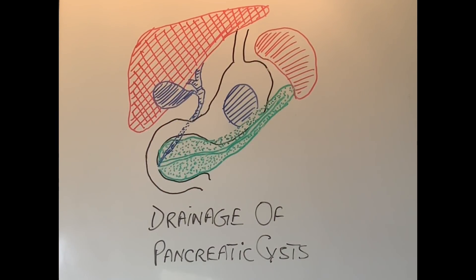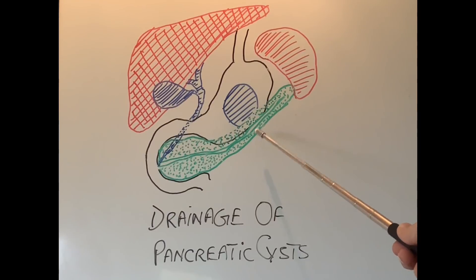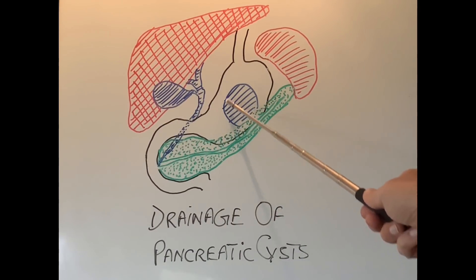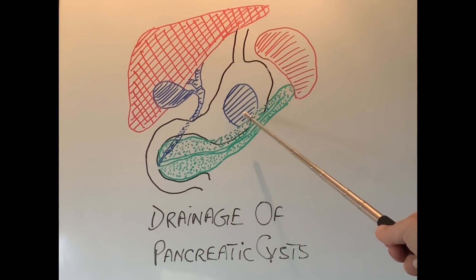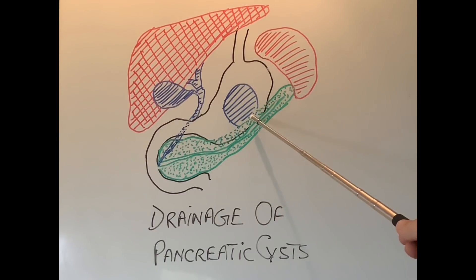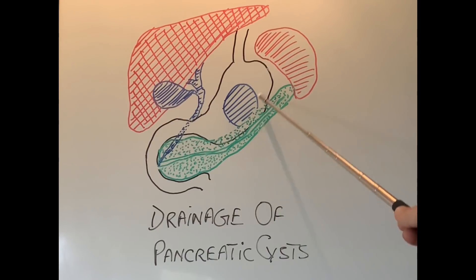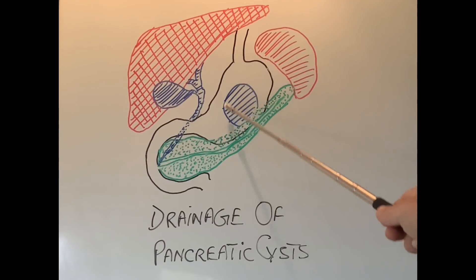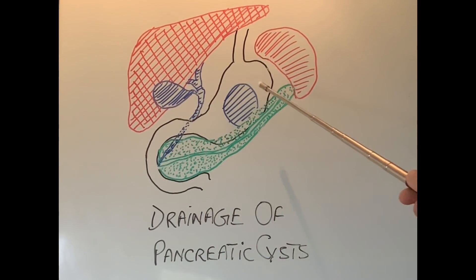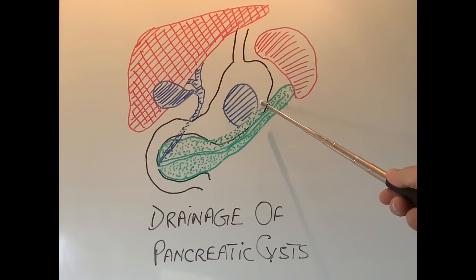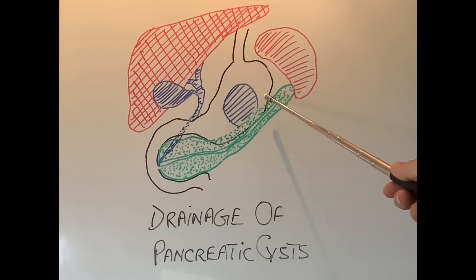The second procedure we are going to talk about is drainage of the pancreatic cyst or pseudocyst of the pancreas. When the pancreas gets inflamed — called acute pancreatitis — it can heal by forming cysts. These cysts are pockets full of clear fluid, almost like yellow straw-colored fluid. When these cysts become very large they can cause pain and discomfort. They usually lie behind the stomach, so the cyst is there and the stomach is sitting on top of it. Many cysts do not require any treatment if they are very small and not causing trouble, however when they become very large and painful and prevent the patient from eating, they can be drained.